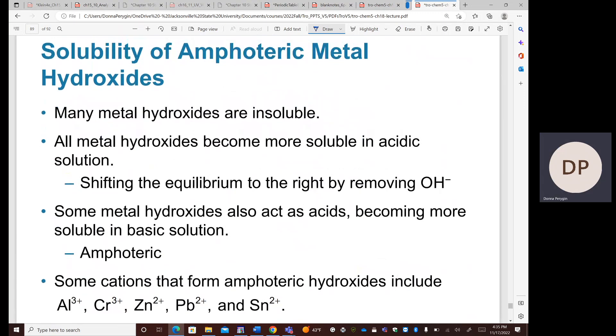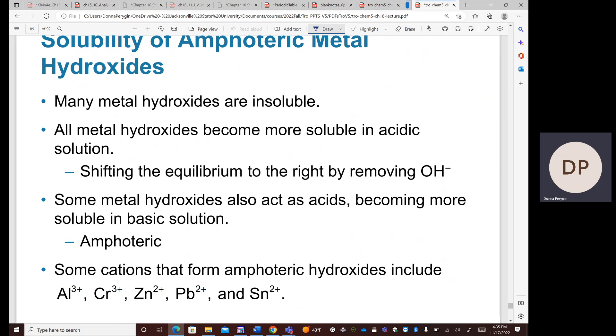This can also be true for metal hydroxides that form either in acid or in base. Metal hydroxides are generally insoluble, but if we put them in basic or acidic solution, they are what's called amphoteric. We saw that water could be amphoteric, that it exists as both an acid and a base, so it has acidic and basic properties. The same can be true for these metal hydroxides.